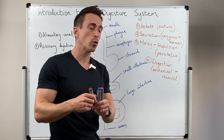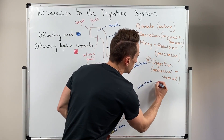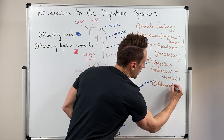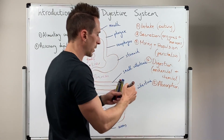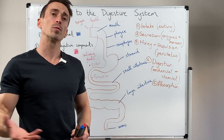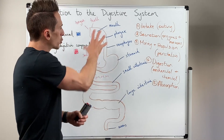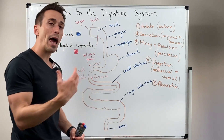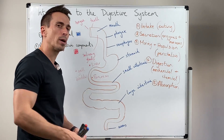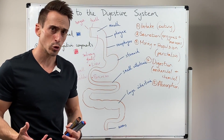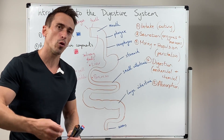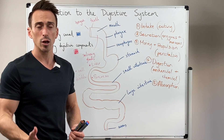Number five is absorption. Once we've broken these things down, we need to absorb them. Most are absorbed into the bloodstream, though some — like fats — are absorbed into the lymphatic system. Different substances are absorbed at different areas of the tract. For example, alcohol can be absorbed at the stomach, but not much else. The small intestines are one of the primary sites for nutrient absorption, while the large intestines are a really important site for vitamins, water, and electrolyte absorption.